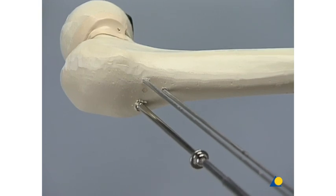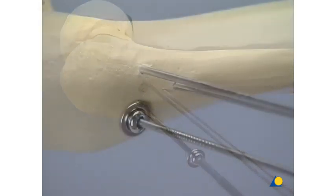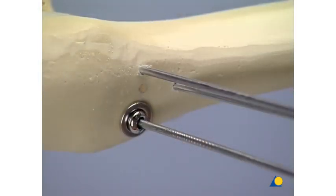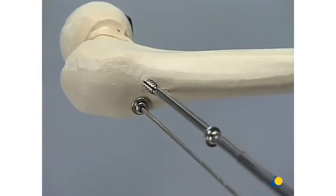The use of washers may prevent the screw head from sinking in. The two remaining screws are inserted accordingly and the guide wires are carefully removed.